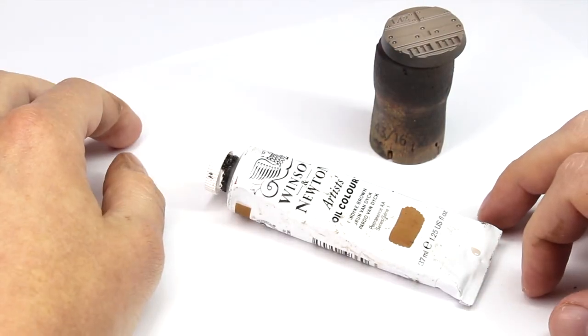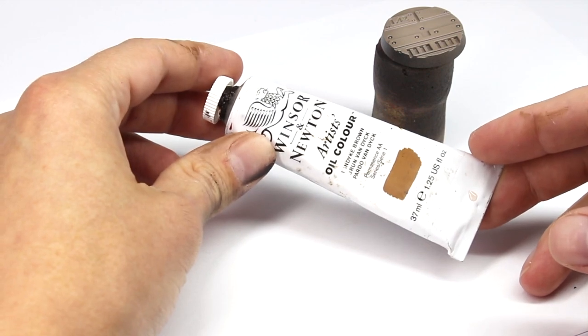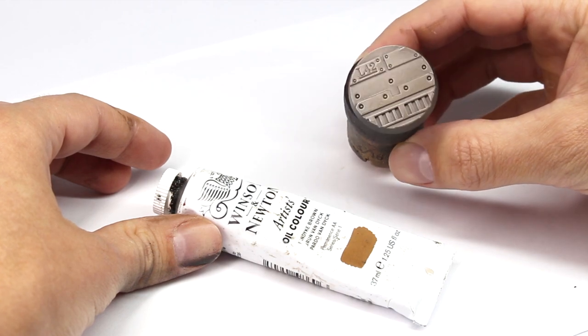The third type of product that we can use for pin washing is oil paint. And here we're going to make a wash using Winsor & Newton Artist Oil Colour Burnt Umber Brown.